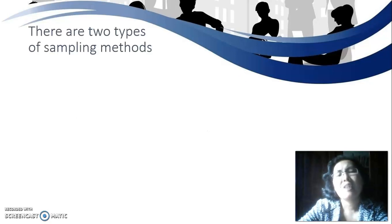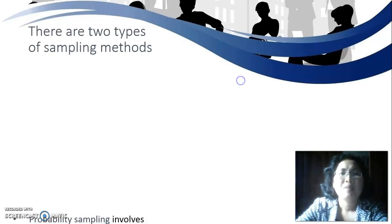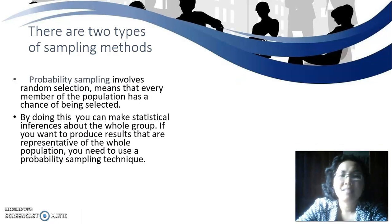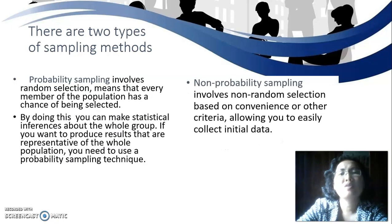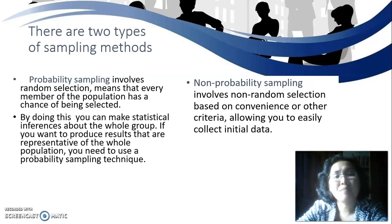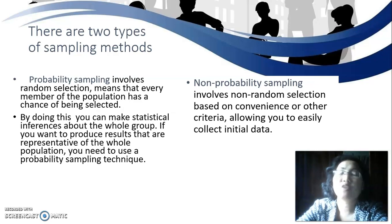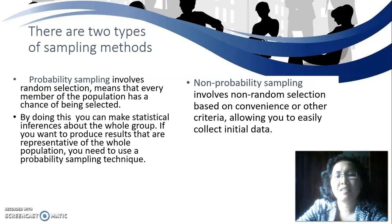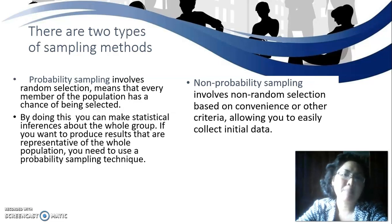There are two types of sampling methods: probability sampling and non-probability sampling. Probability sampling involves random selection, meaning that every member of the population has a chance of being selected. By doing this, you can make statistical inferences about the whole group. If you want to produce results that are representative of the whole population, you need to use a probability sampling technique.